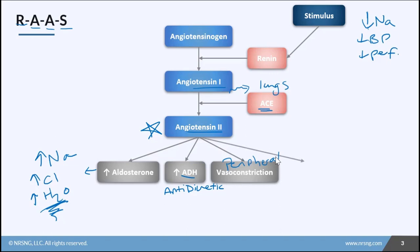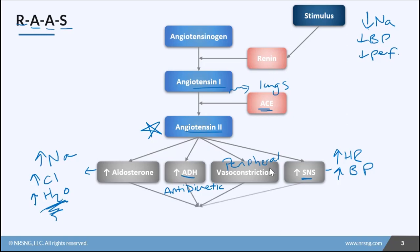The last thing we're going to see is increased sympathetic nervous system activity, which is going to increase our heart rate, increase our blood pressure, and many other things — be sure to review the autonomic nervous system lesson for more on that. Ultimately, all of these things work together to help increase our blood volume, which increases our blood pressure and helps improve flow to the kidneys.